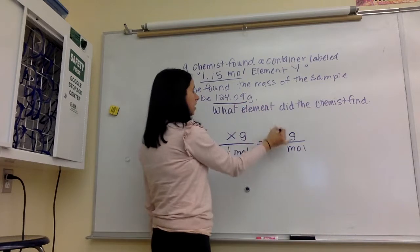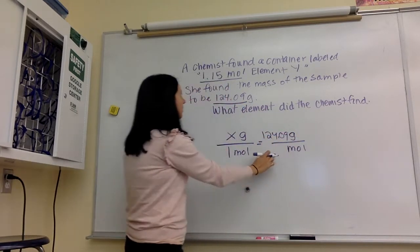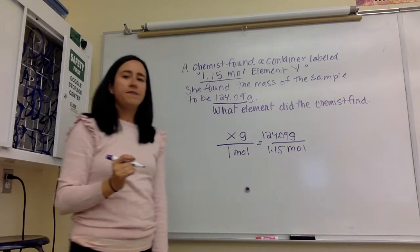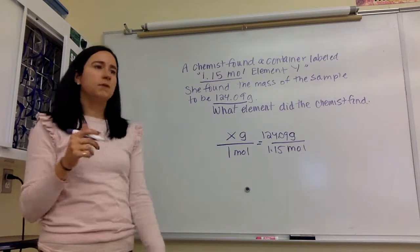So grams is going to go with grams, 124.09, and I'm going to plug my moles in with my moles, 1.15. And just like with our previous examples, to solve for x, we need to cross multiply.